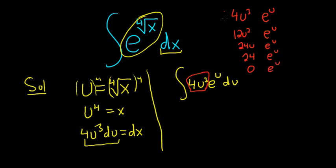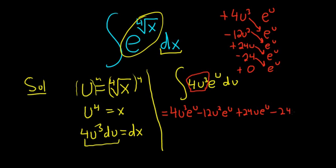Then you start with plus. So you do plus, minus, plus, minus, plus. Then you draw arrows. And then you follow the arrows and that is the answer. So this is 4u cubed e to the u minus 12u squared e to the u plus 24u e to the u minus 24 e to the u plus c.